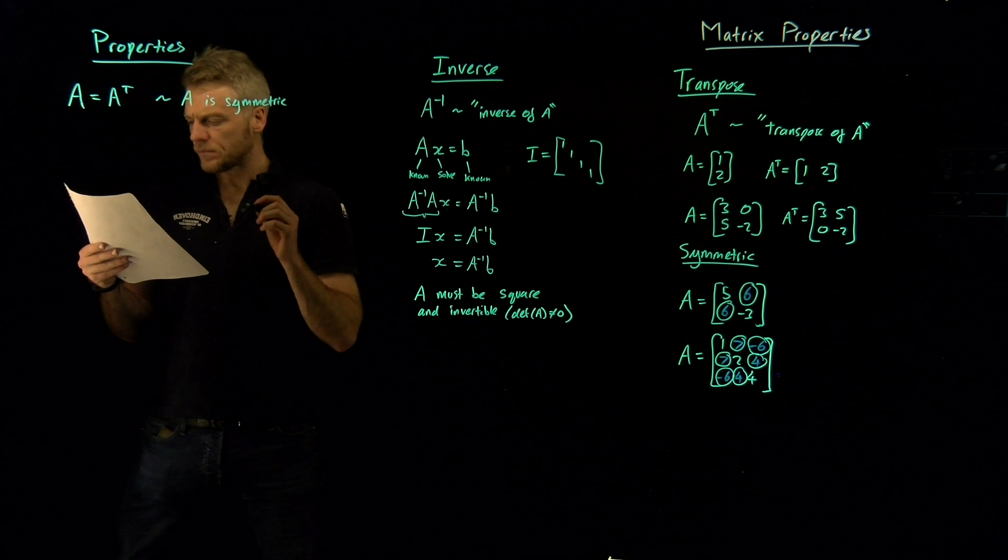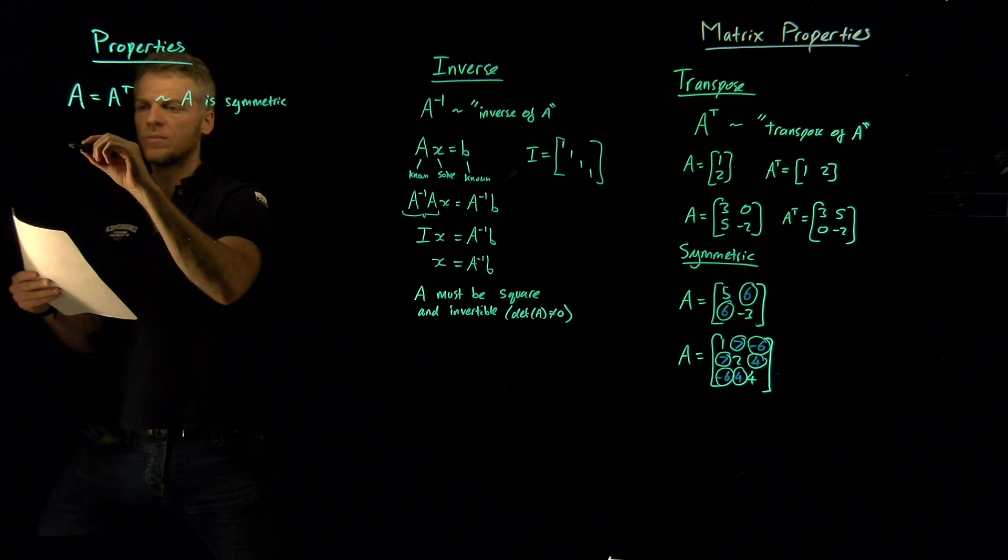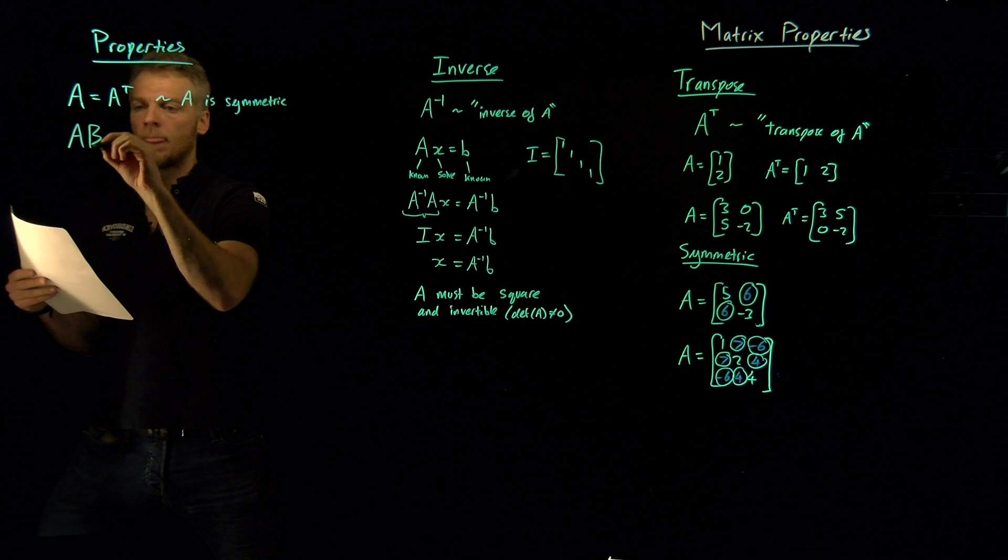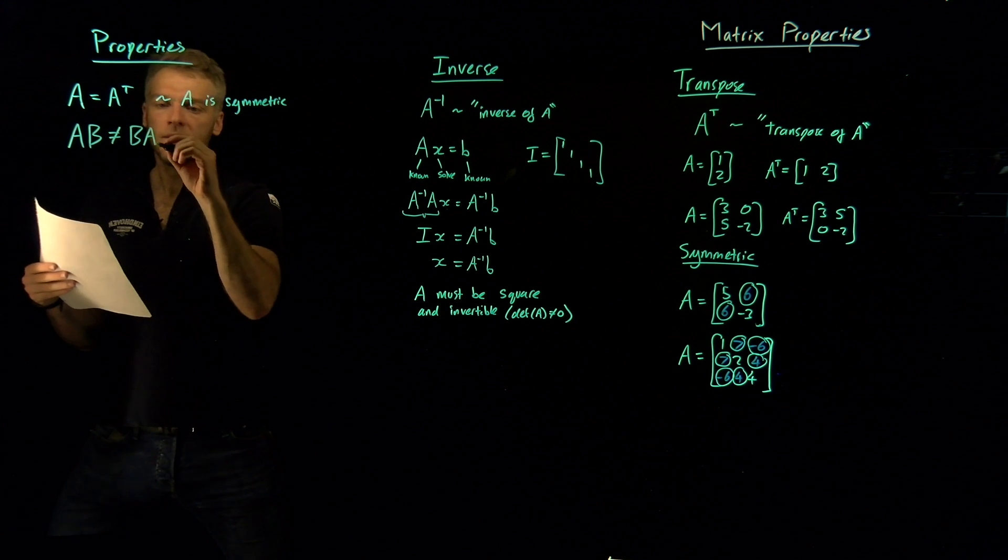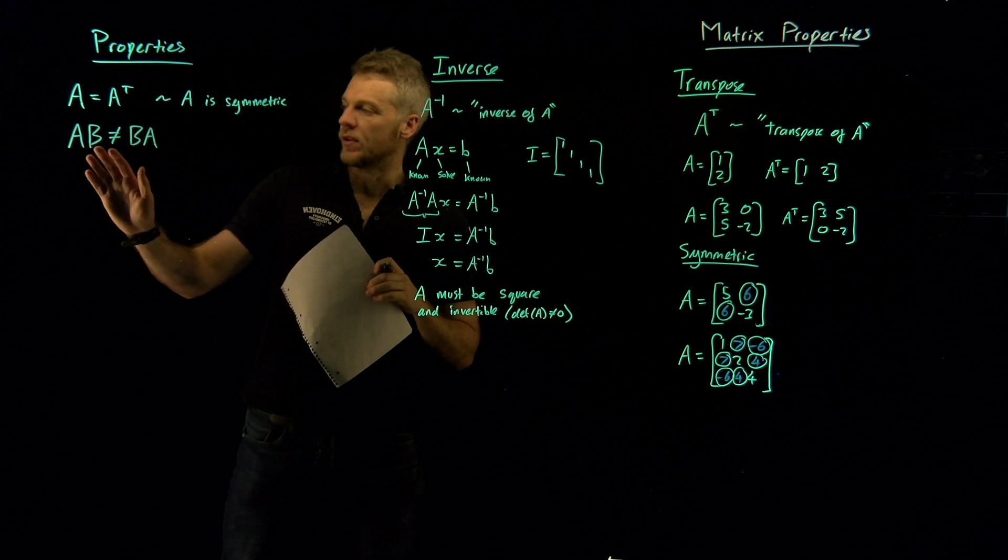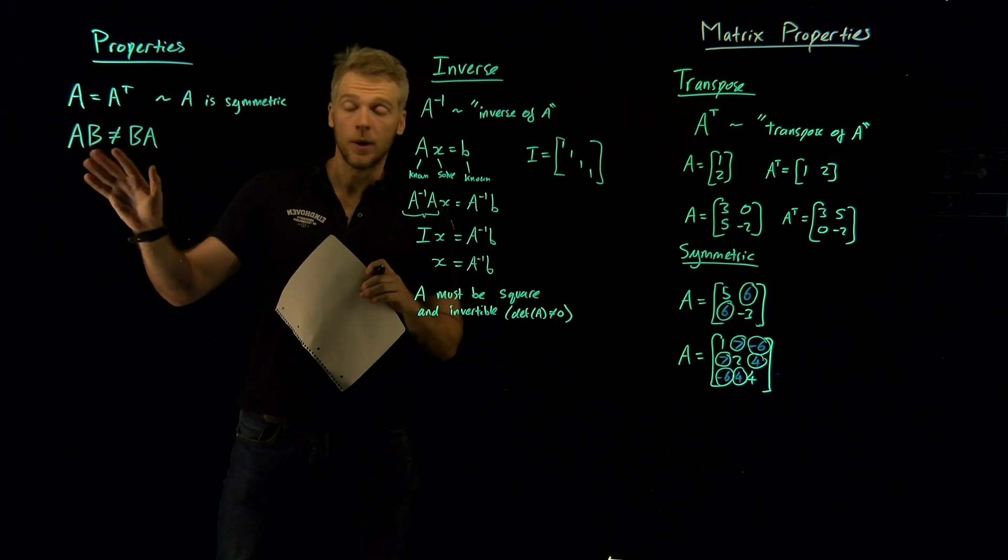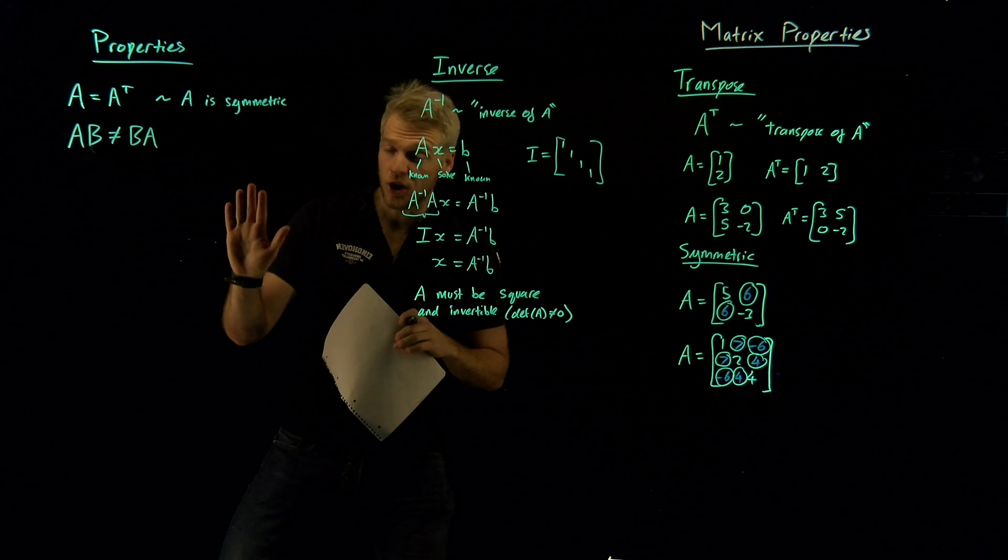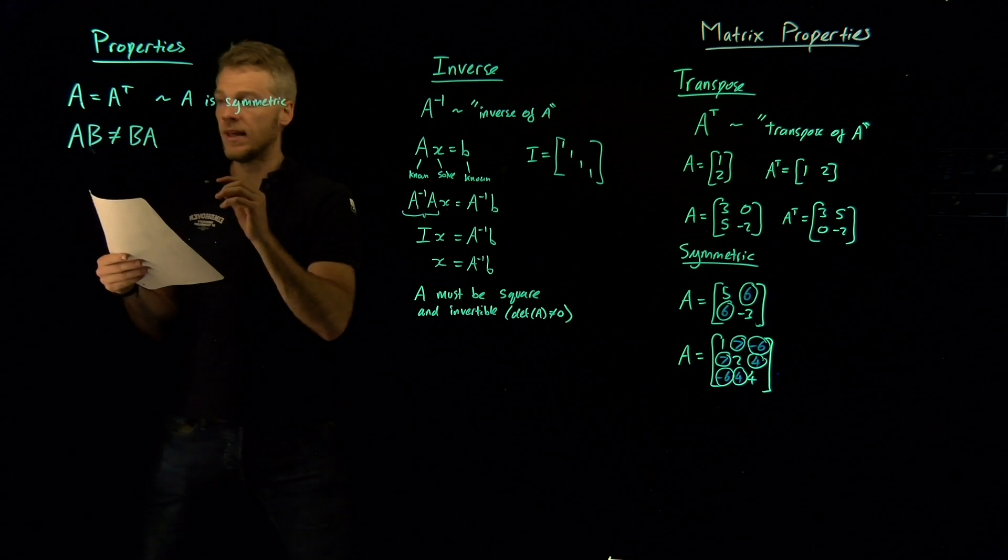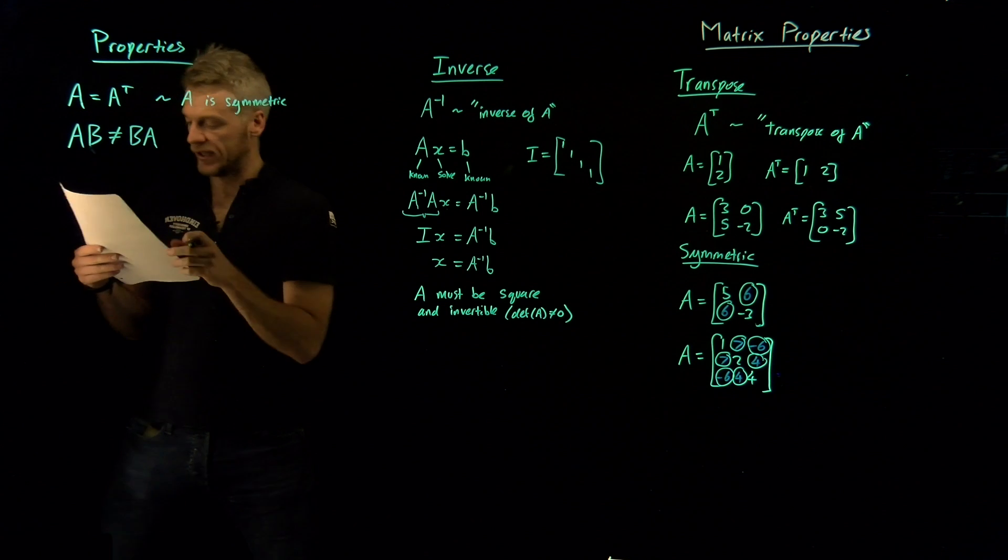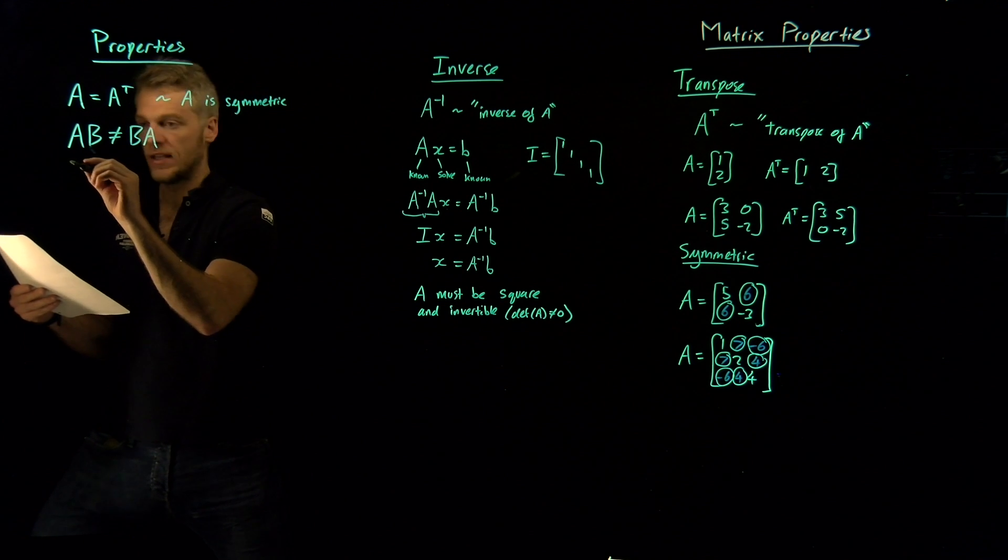Okay, another thing is, perhaps I should have written this first. In matrix algebra, AB does not always equal to BA. This is a little bit confusing because we're used to dealing with scalar numbers, where if we multiply two scalars together, it doesn't matter which way we multiply them. That is not generally true when we deal with matrices. I should also mention that. I want to make that very clear, that's a not equal sign.